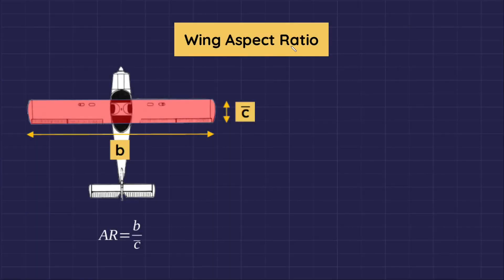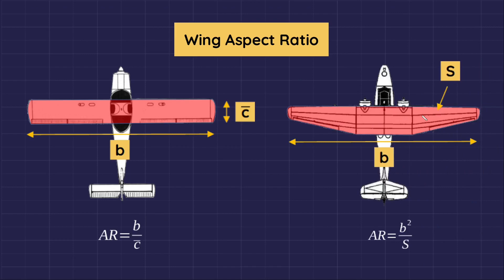Wing aspect ratio is the wingspan divided by the wing chord. Wing chord is the length of the wing from the leading edge to the trailing edge. If the wing chord is equal throughout the length of the wing, as in a rectangular wing shape, the aspect ratio formula is straightforward. But for most wings, the chord varies along the wing, and for non-rectangular planforms, aspect ratio is calculated as the square of the span divided by the wing planform area.